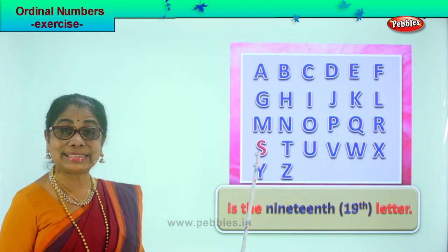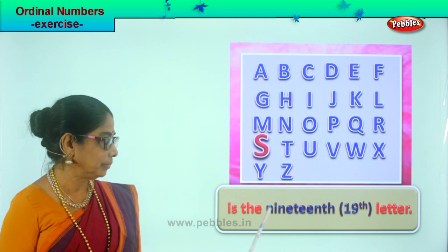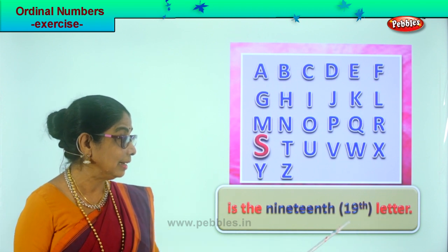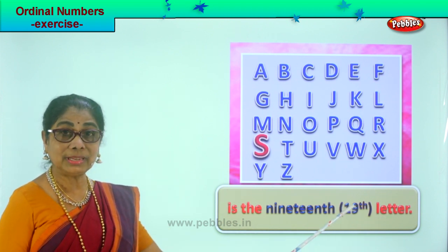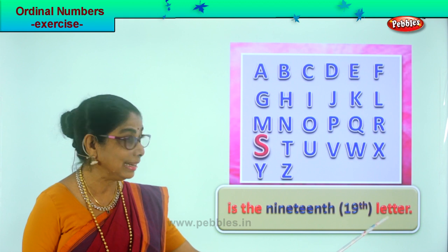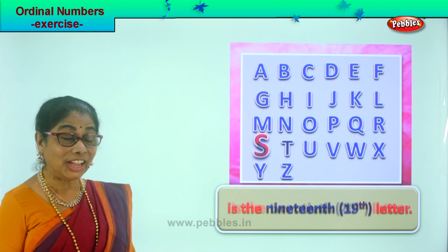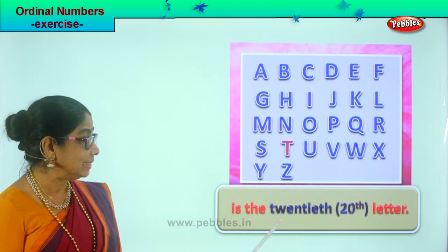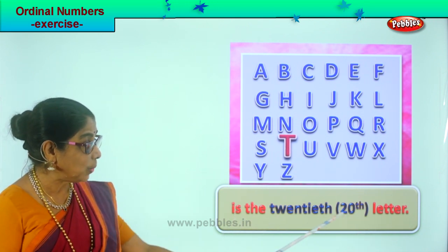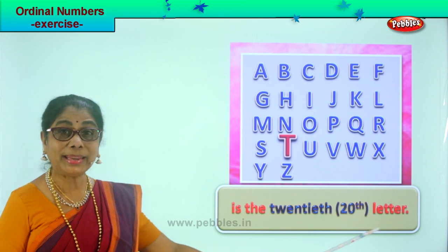Next, S — S is the nineteenth letter. Write nineteen and TH for nineteenth. S is the nineteenth letter. After S, T — T is the twentieth letter. Look how you write twentieth: twenty and TH. T is the twentieth letter.